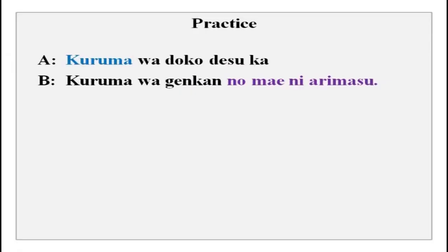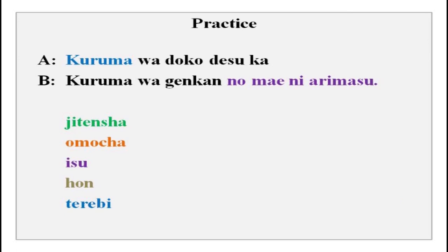Kuruma wa doko desu ka? Kuruma wa genkan no mae ni arimasu. Genkan is a gate. Jitensha wa doko desu ka? Jitensha wa genkan no mae ni arimasu. Omocha wa doko desu ka? Omocha wa genkan no mae ni arimasu. Isu wa genkan no mae ni arimasu. Hon wa genkan no mae ni arimasu. You can practice with all of these.